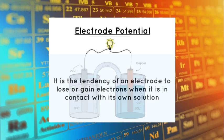Electrode potential is the tendency of a metal to lose or gain electrons when it is in contact with its own ion solution. For example, zinc in zinc sulfate solution tends to lose electrons, while copper in copper sulfate solution tends to gain electrons. This tendency is called electrode potential.